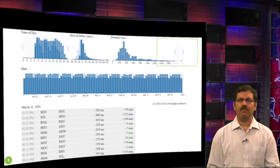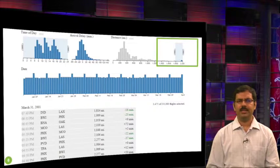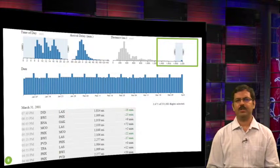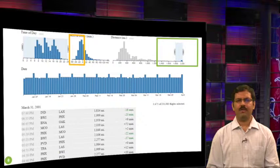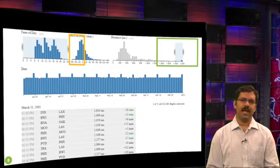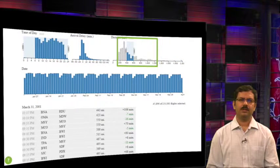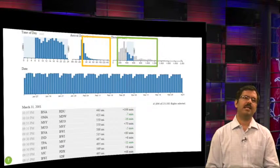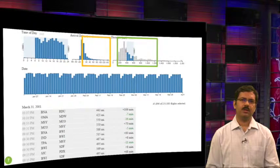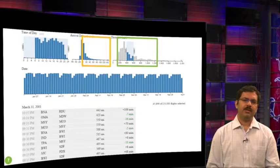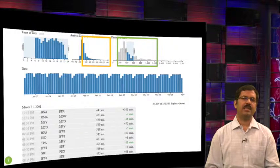Let's say we select long-haul flights. Notice that the moment I select long-haul flights, the remaining widgets have been filtered to reflect the selection. Also notice the arrival delays — for long-haul flights, most of the flights not only come on time, but some arrive up to an hour earlier. Let's change the selection to short-haul flights. When we select short-haul flights, notice that many of the flights are delayed, and in some cases delayed by almost up to two hours. Pretty much like human behavior — folks who come from far away generally come for meetings on time.